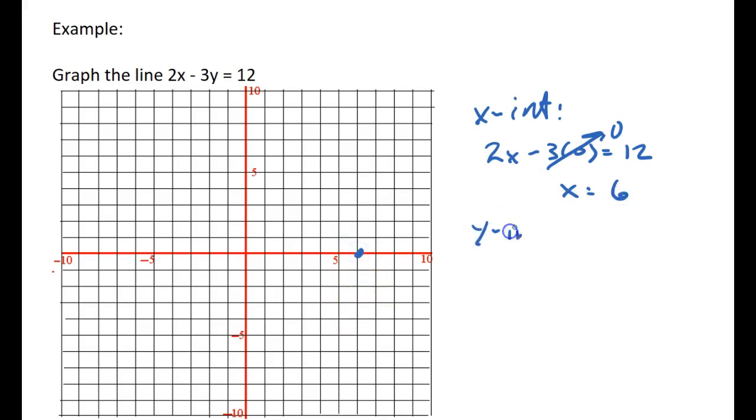Now I'm going to graph the y-intercept, and that means I'm going to set x equal to zero and solve for y. So -3y = 12, y = -4. There are my two points for my line. Connect them, and there's the line.